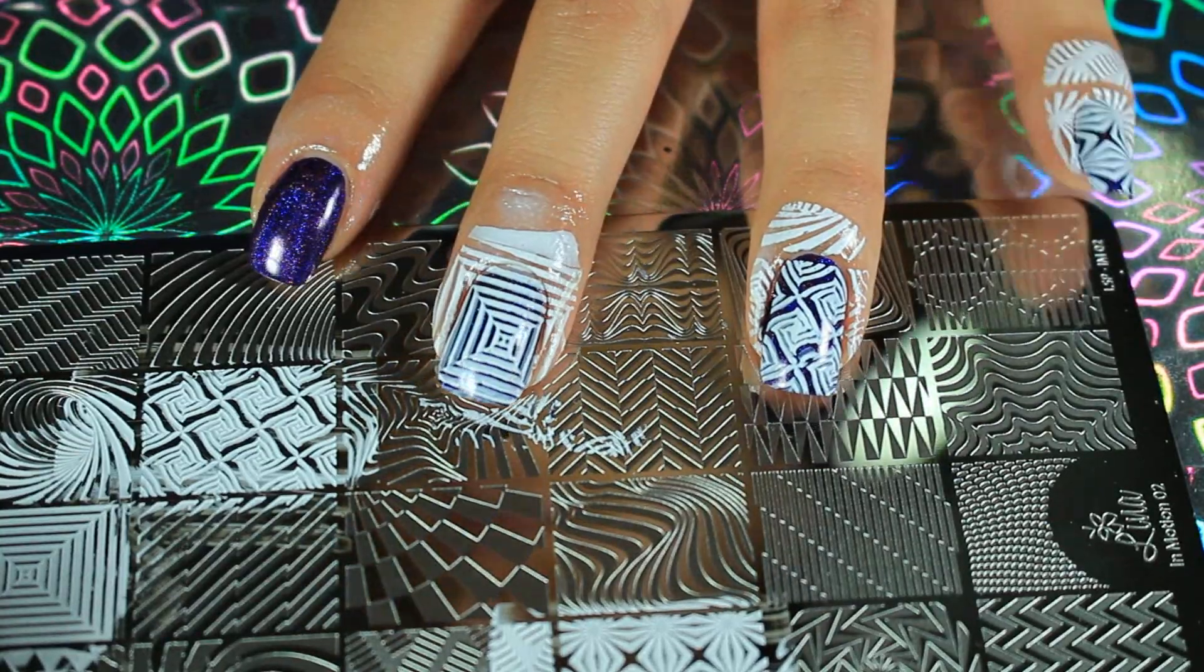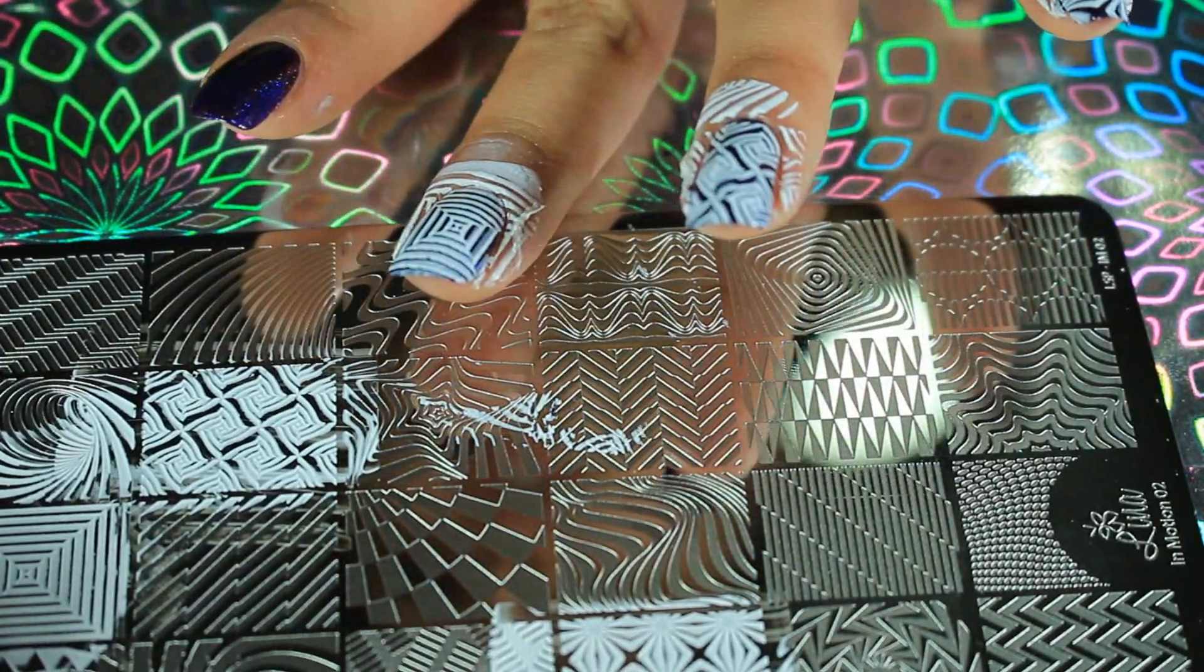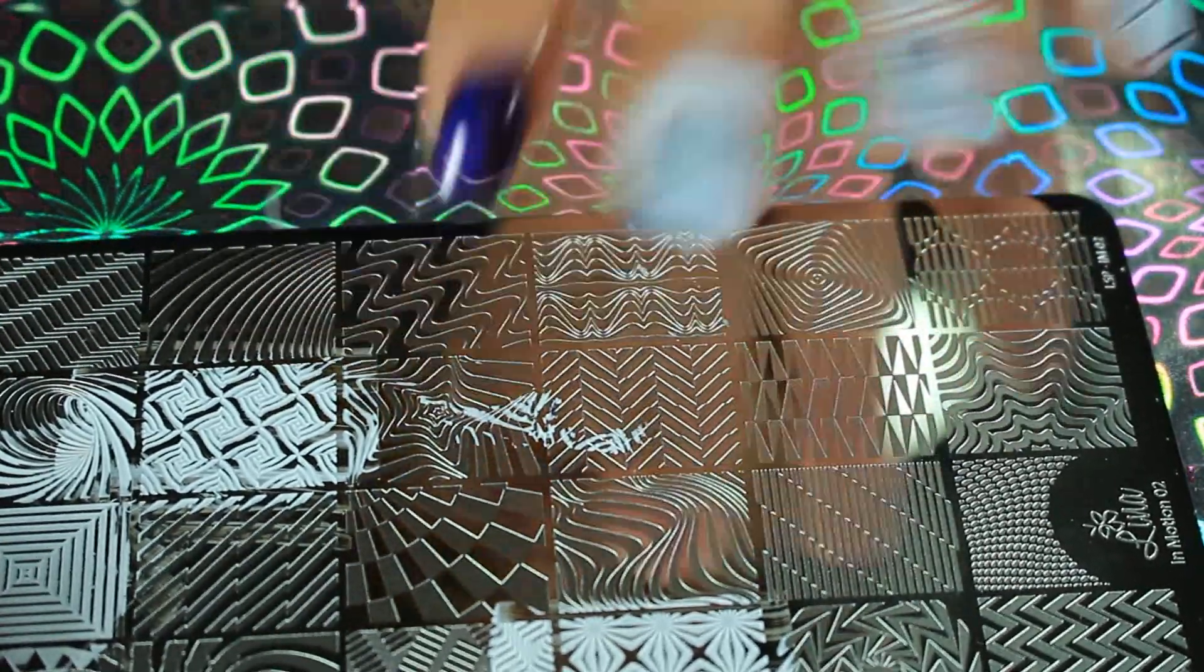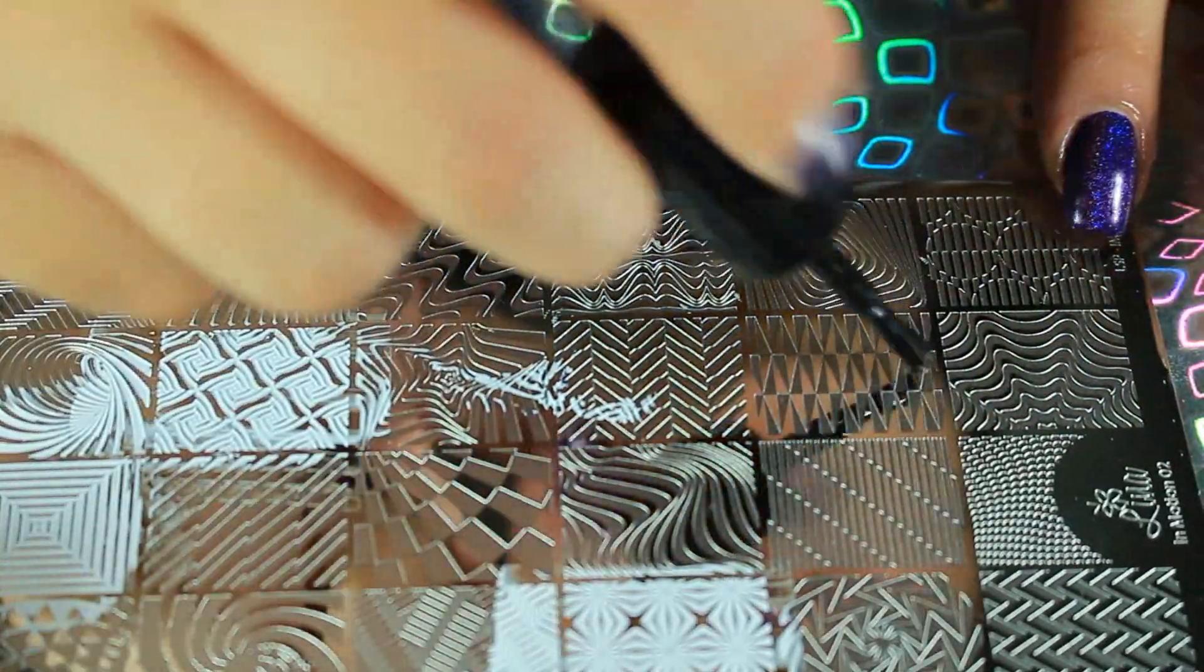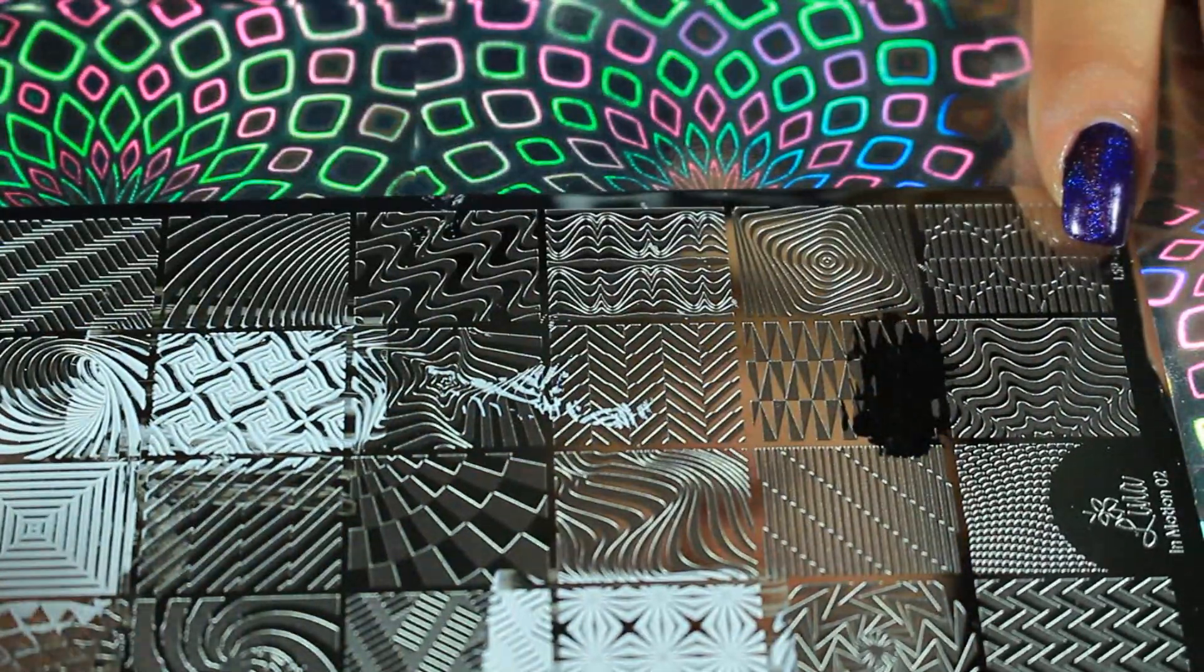Okay, this stamper is kind of smushing the image. It's almost like it's double picking it up. So that is why it looks like that. But it's the stamper, not the plate. So I'm going to go ahead and just show you a few in black on just the stamper.